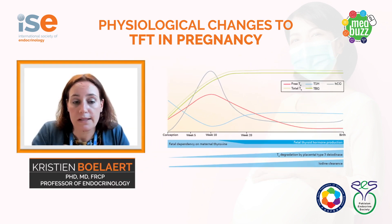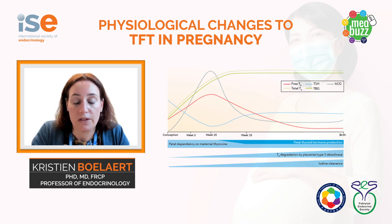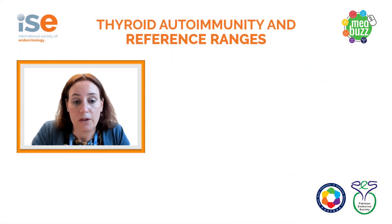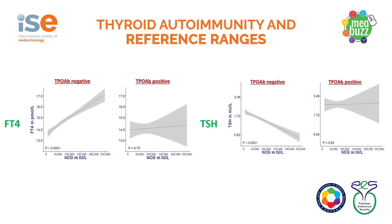A further factor influencing thyroid function in pregnancy is the presence of thyroid antibodies. These are present in about 15% of the general population and are even higher in women with infertility. The presence of TPO antibodies affects thyroid function differently. As these graphs show, the usual expected decrease in TSH and increase in T4 occurs in TPO antibody-negative women, but not in those who are TPO antibody-positive. Current guidance therefore recommends using pregnancy- and trimester-specific reference ranges, ideally determined in women without thyroid disease.